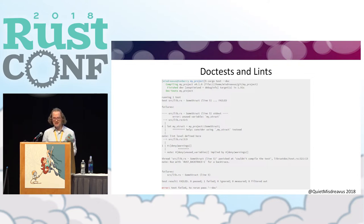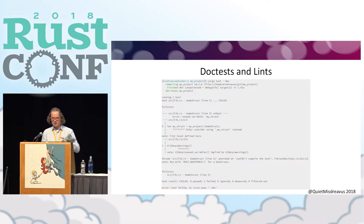The standard library does this a lot — it uses deny(warnings) but allows a handful of things like deprecated, so that it can document deprecated items. It uses this to control and make sure that its doc tests are held to the same standard as its code.